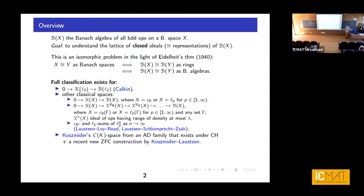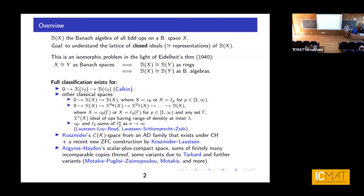We can also add to this list some, maybe exotic from some perspective, C(K) spaces. The first one was constructed by Koszmider under CH, and I guess Niels is going to talk about a new version where the assumption of the continuum hypothesis was removed. The Argyros–Haydon space opened a gate to a zoo of examples, and by refining the construction you can get more and more examples, though they are very exotic.